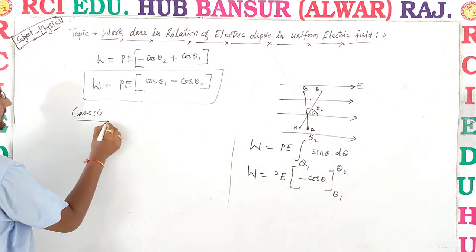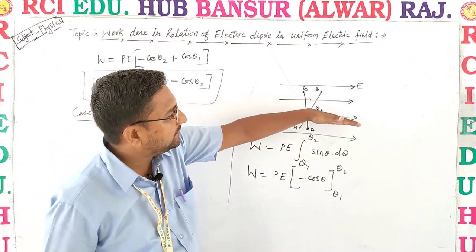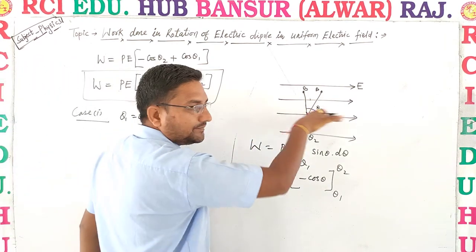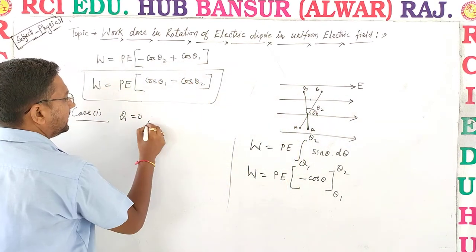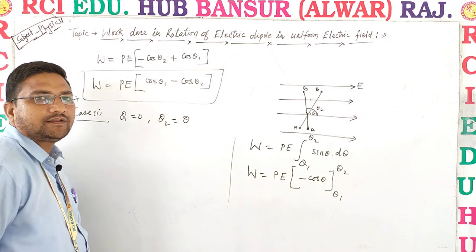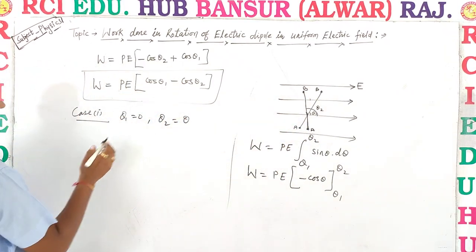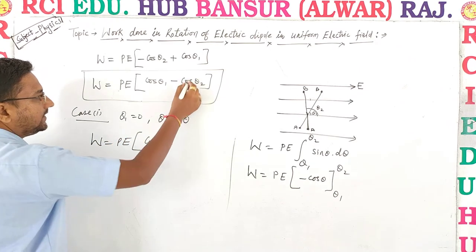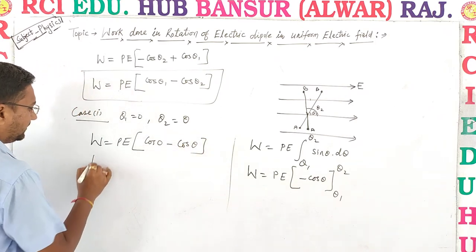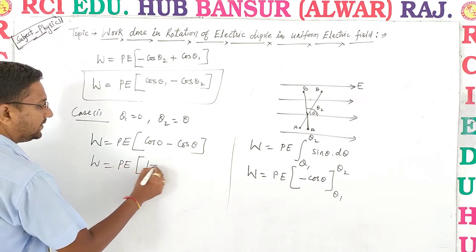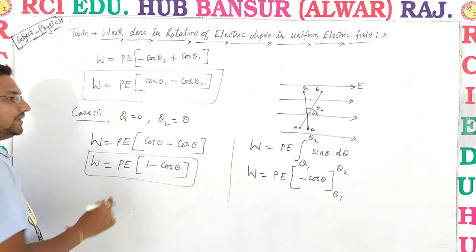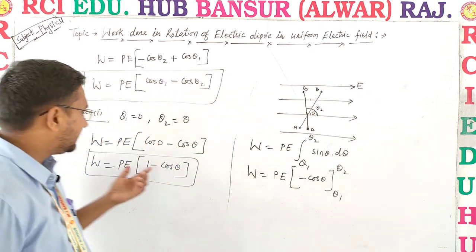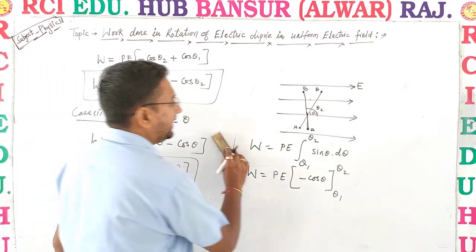Case 1: The dipole is initially placed parallel to the electric field, so theta1 = 0, and rotated to some angle theta. Substituting: W = pE(cos0 − cosθ) = pE(1 − cosθ). This is the work done when the dipole starts parallel and is rotated to angle theta.